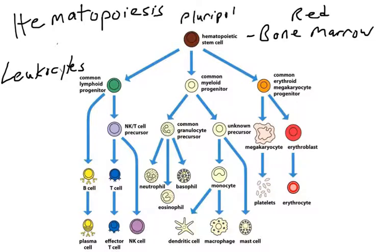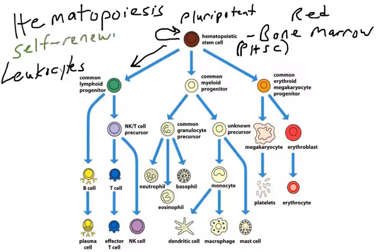In the bone marrow, you find stem cells, sometimes referred to as pluripotent hematopoietic stem cells. These cells are self-renewing — when they undergo mitosis, they produce more of themselves. Some daughter cells will differentiate into different cell types depending on what the body needs, and certain cytokines can trigger the production of specific leukocytes.